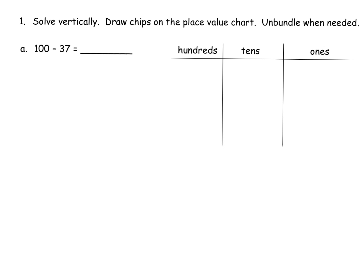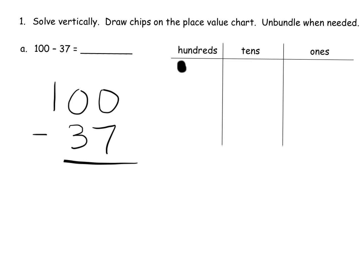We're going to do this on the number disks first, on the place value chart. We're going to model 100 — so there's a hundred. Now we need to subtract 37, so I'm going to write it down vertically: 100 minus 37. Teachers, remember to help students line up the ones and tens columns. We need values in the ones column so we can take away seven — we have nothing there — so we're going to unbundle twice. We unbundle and get ten tens, then unbundle again and get ten ones.